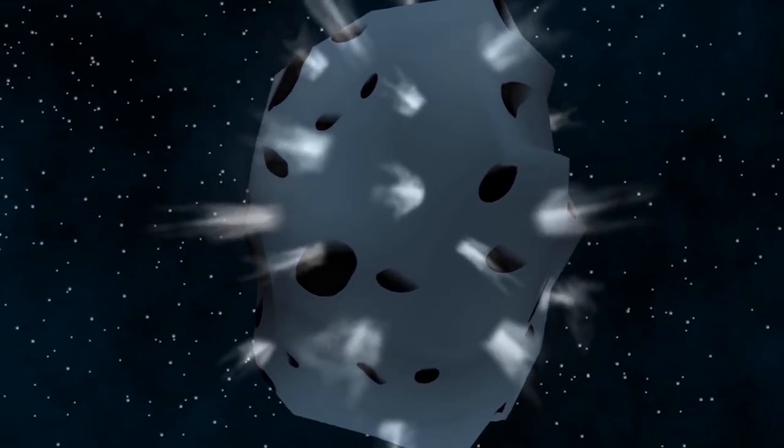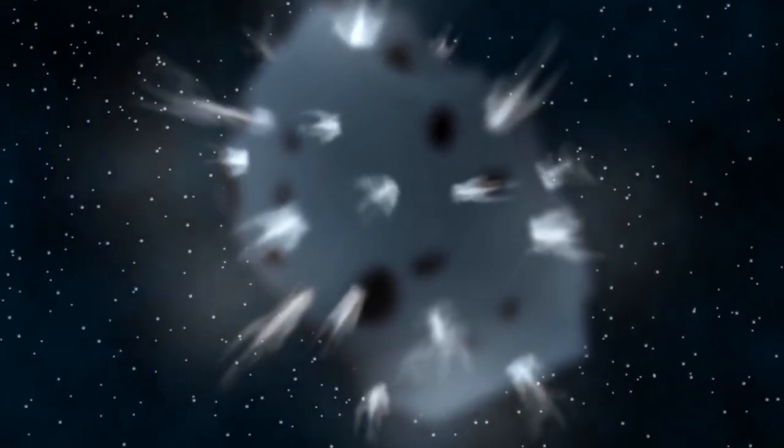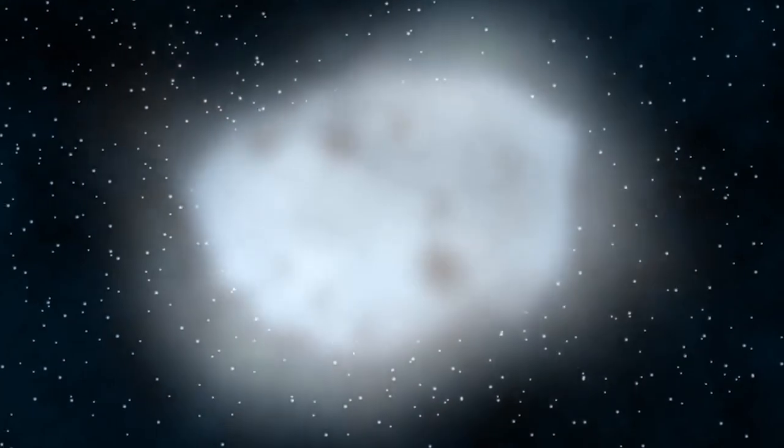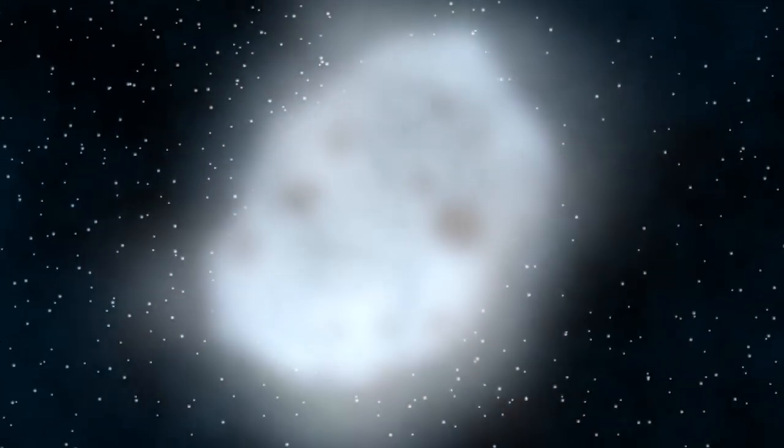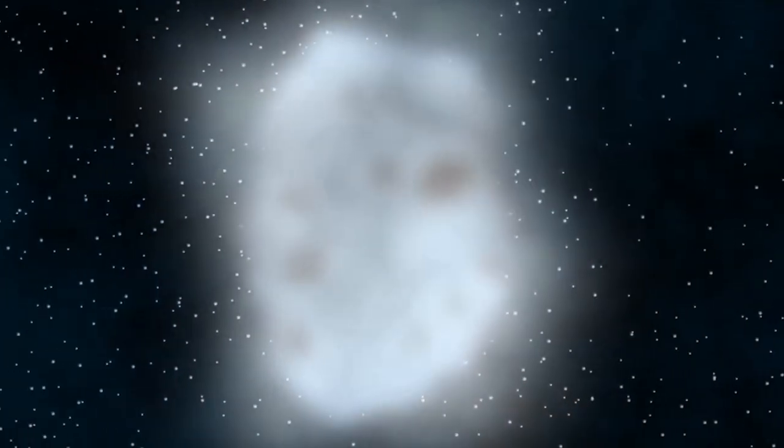However, when a comet gets close to the Sun, it starts heating up and eventually the ice begins to turn into gas. This causes jets of gas and dust to burst out of the comet. The gas and dust create a huge fuzzy cloud around the nucleus, which is called the comet's coma.